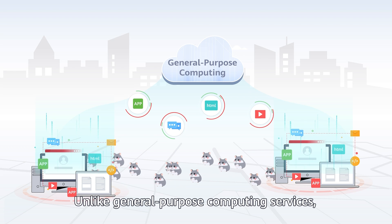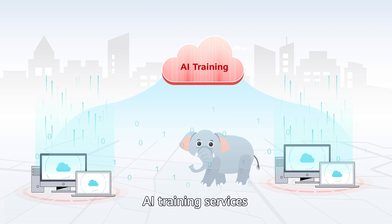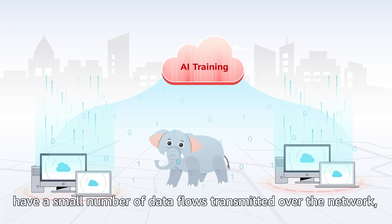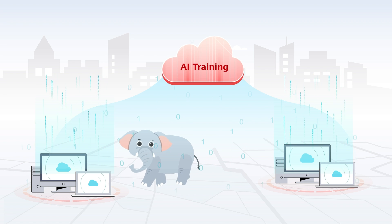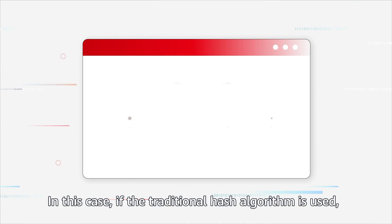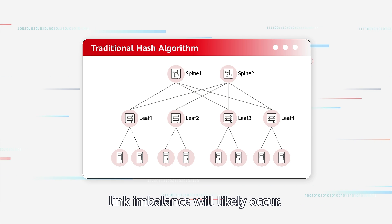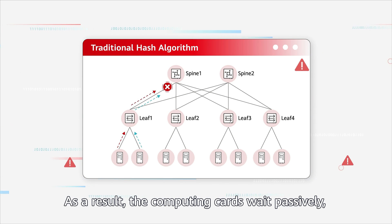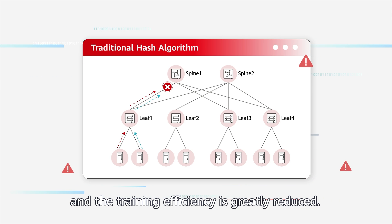Unlike general-purpose computing services, AI training services have a small number of data flows transmitted over the network, though each of them is heavy. In this case, if the traditional hash algorithm is used, link imbalance will likely occur. As a result, the computing cards wait passively and the training efficiency is greatly reduced.